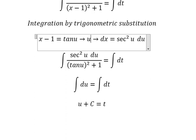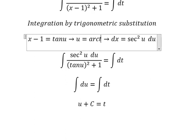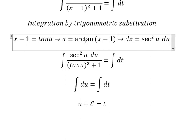So you get about u equal to arctan of x minus one. So we put this one, we put it in here.